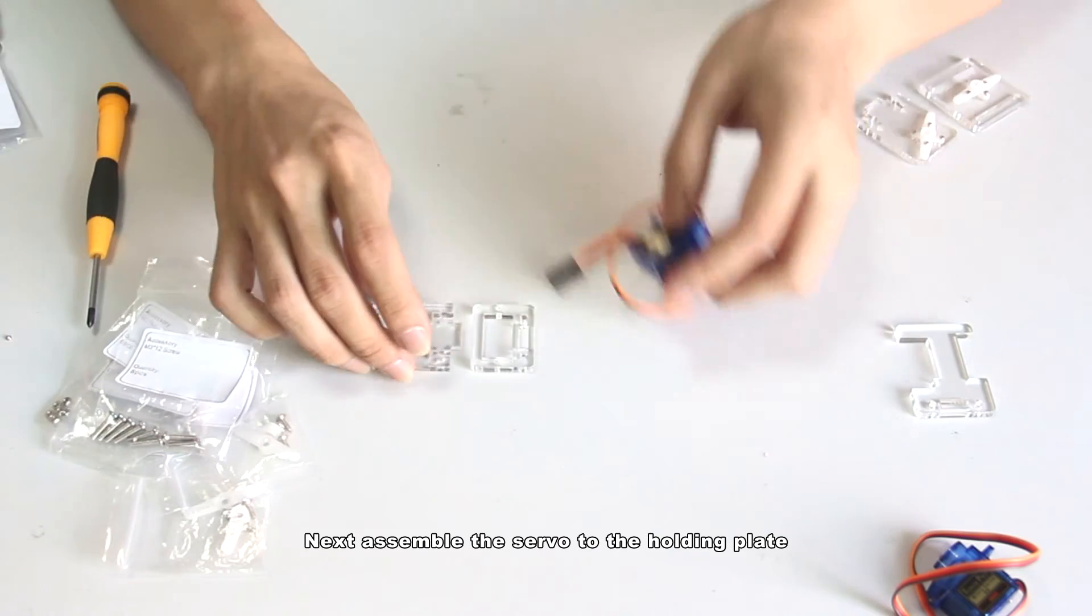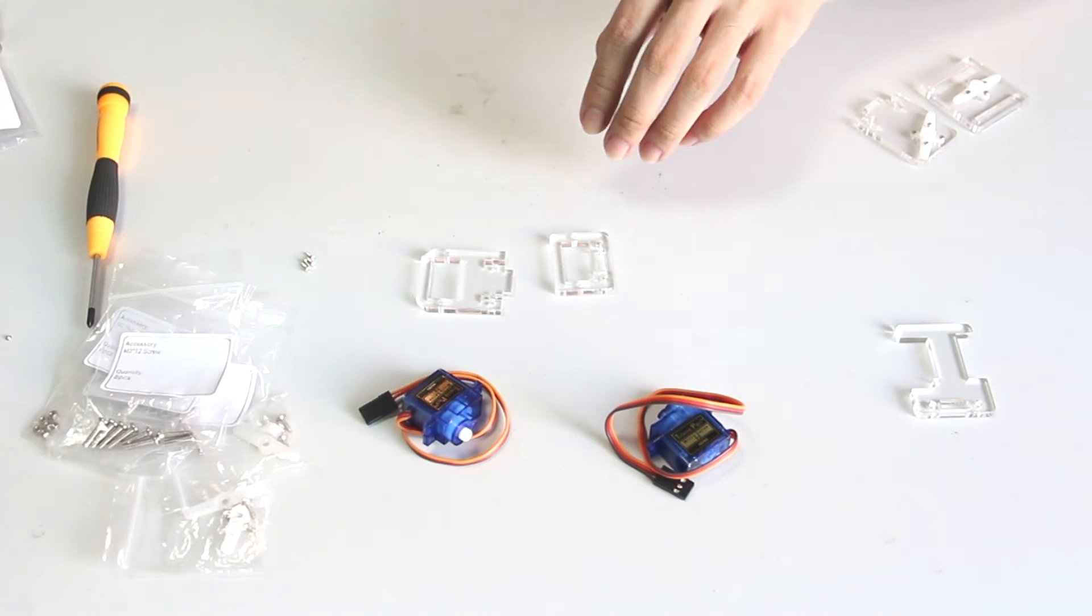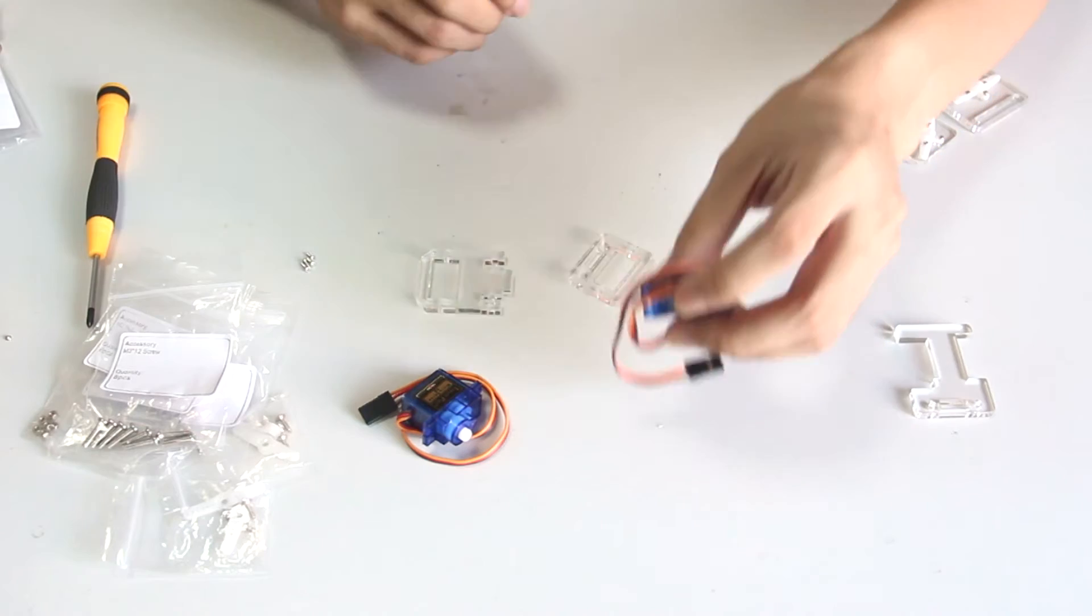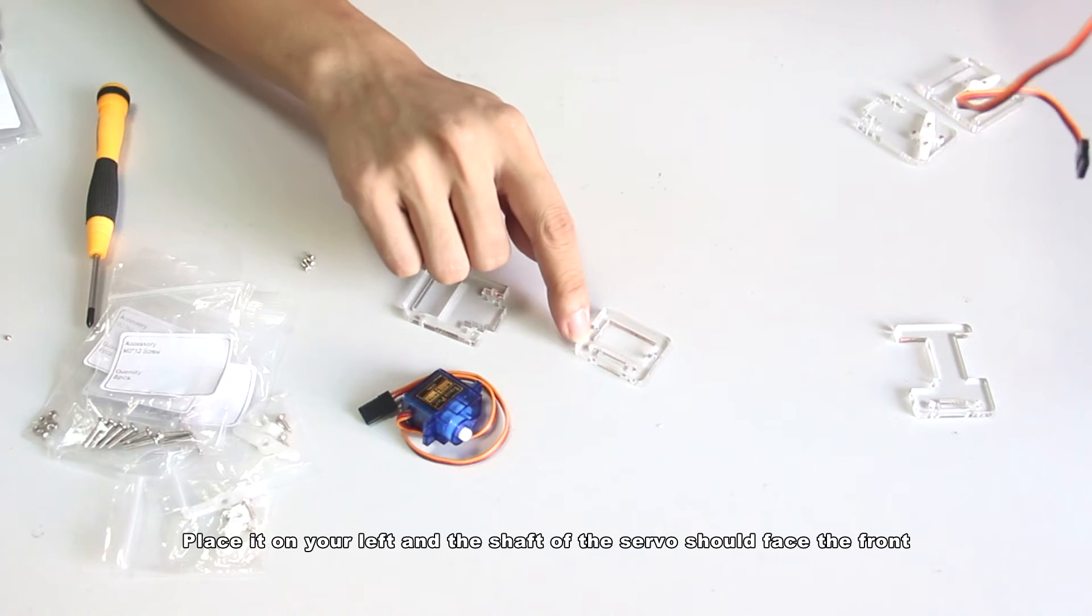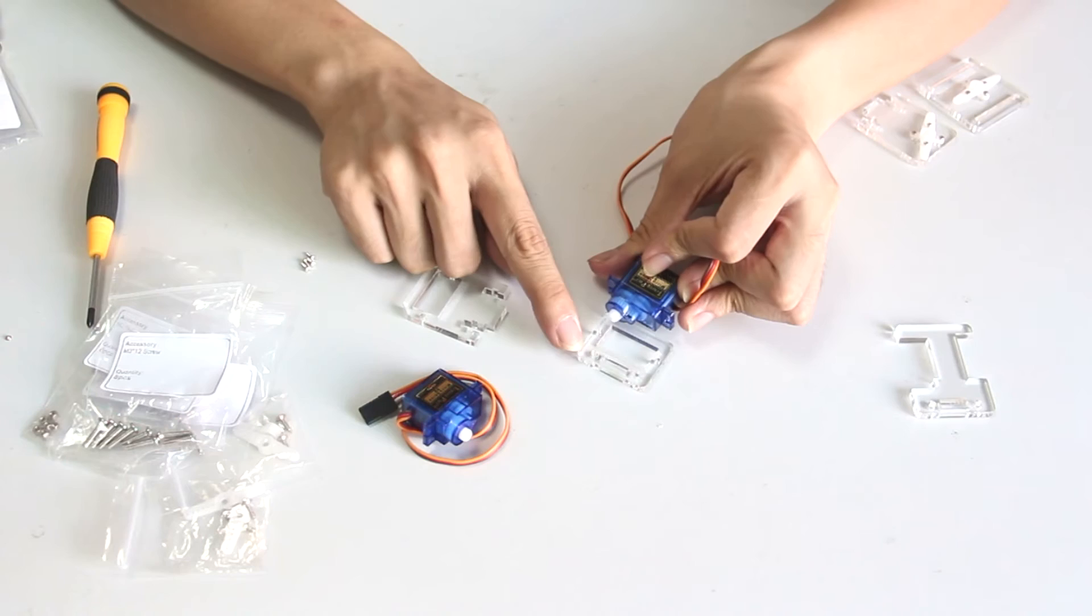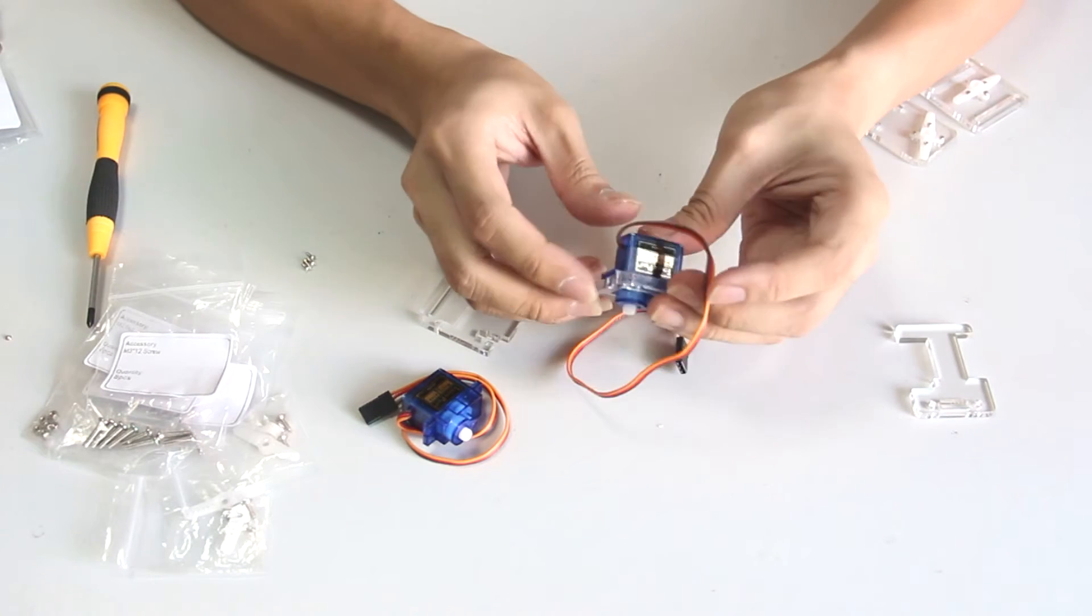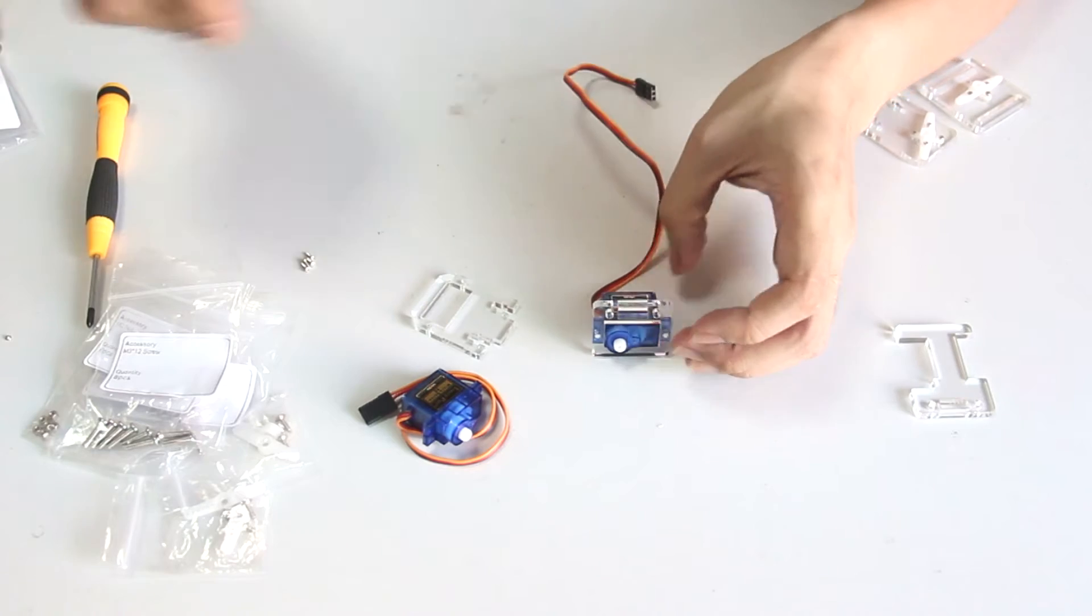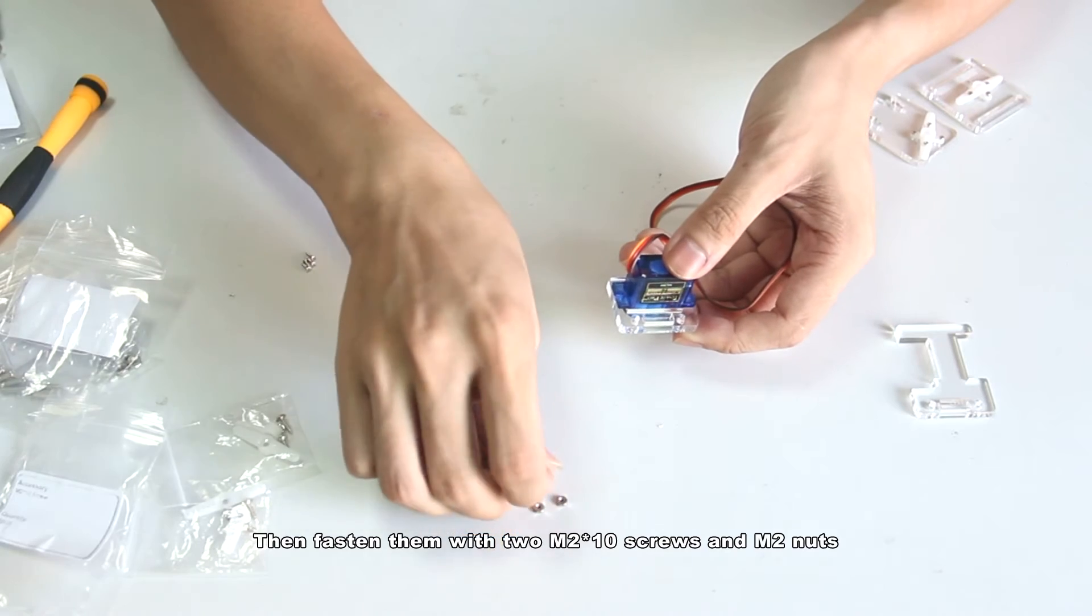Next assemble the servo to the holding plate. You can see a long slot on the plate. Place it on your left and the shaft of the servo should face front. Insert the servo. Then fasten them with two M2x10 screws and M2 nuts.